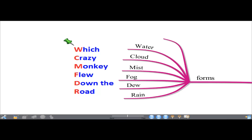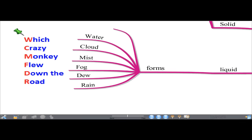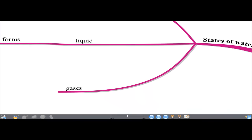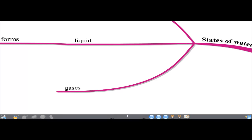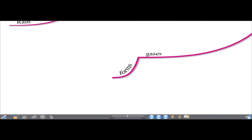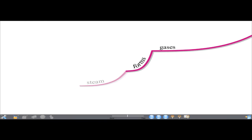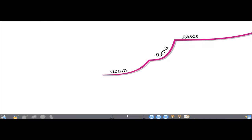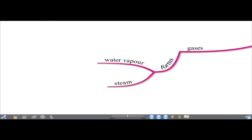R is for rain. The third state in which water is available is the gaseous state, and the forms are steam and water vapor.